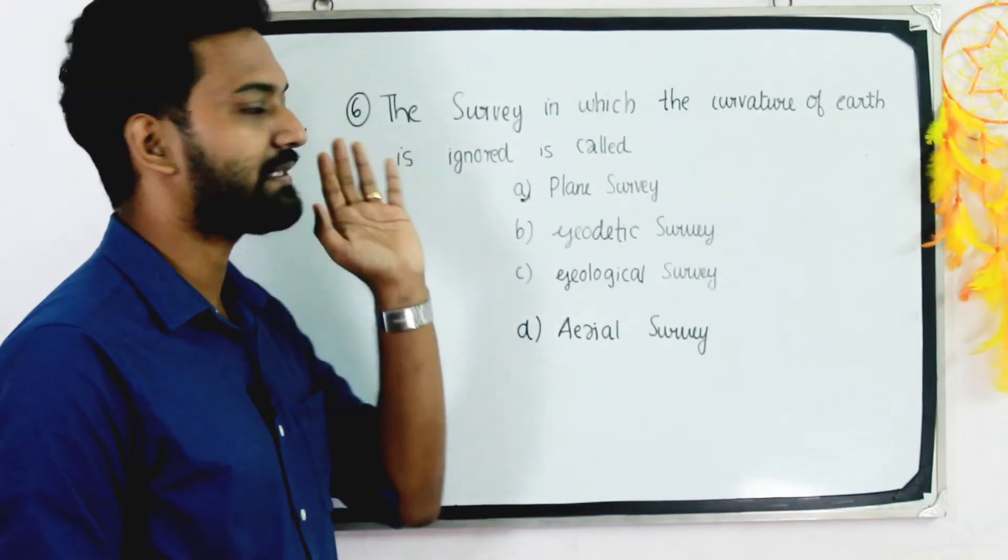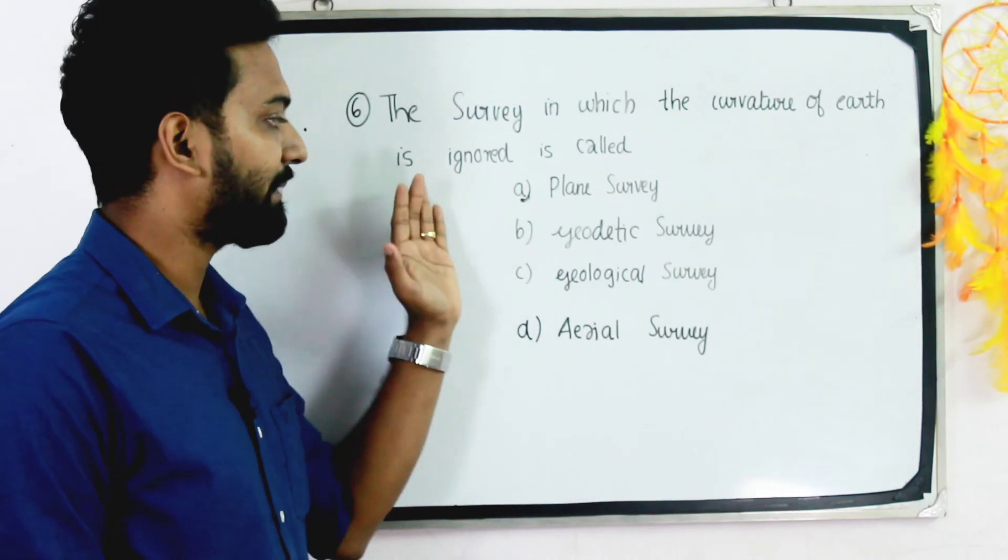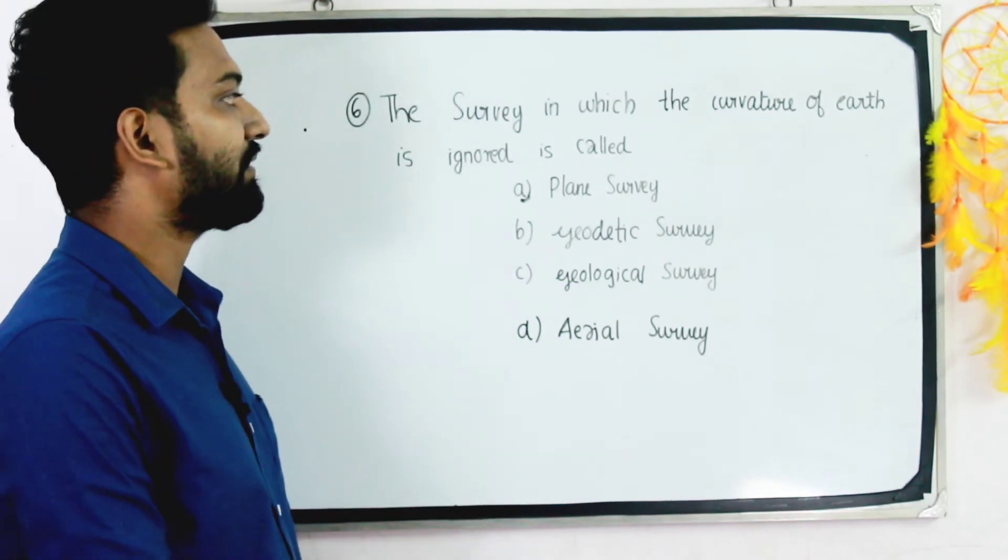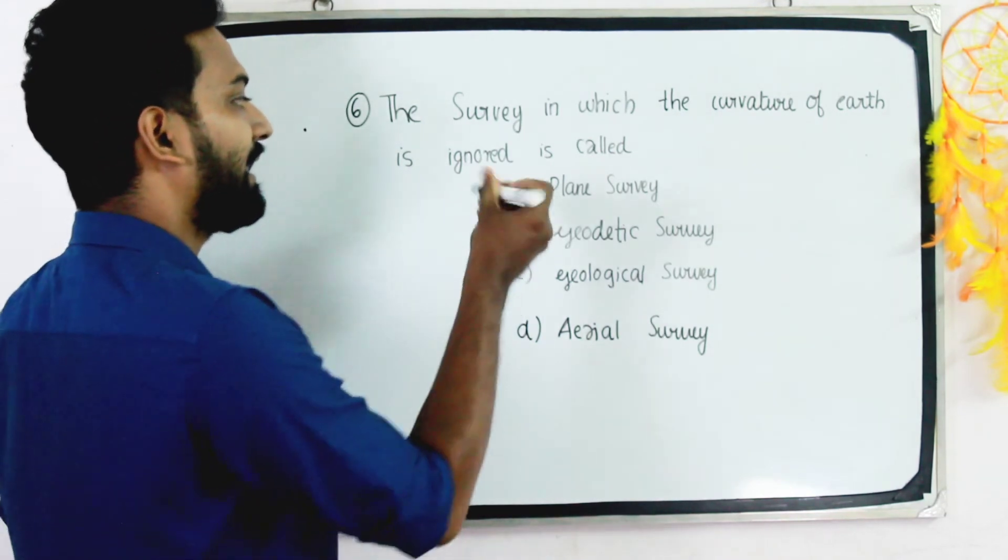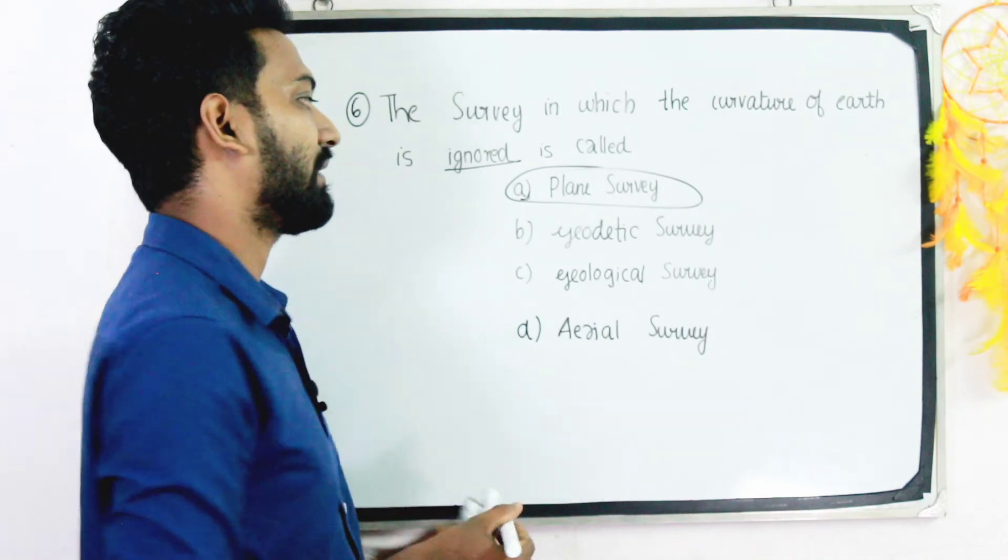The survey in which the curvature of earth is ignored is called: Option A - plane survey, B - geodetic survey, C - geological survey, and D - aerial survey. The answer is option A, plane survey.